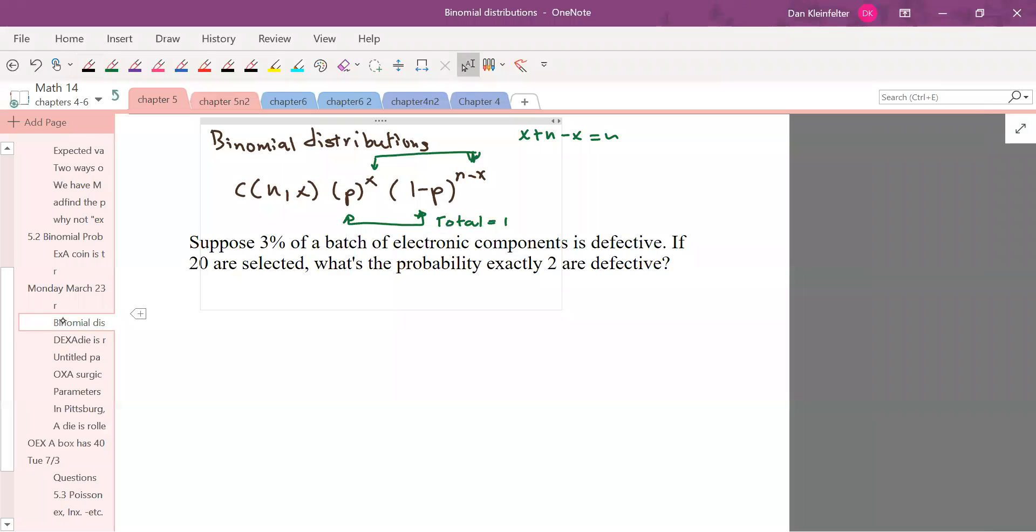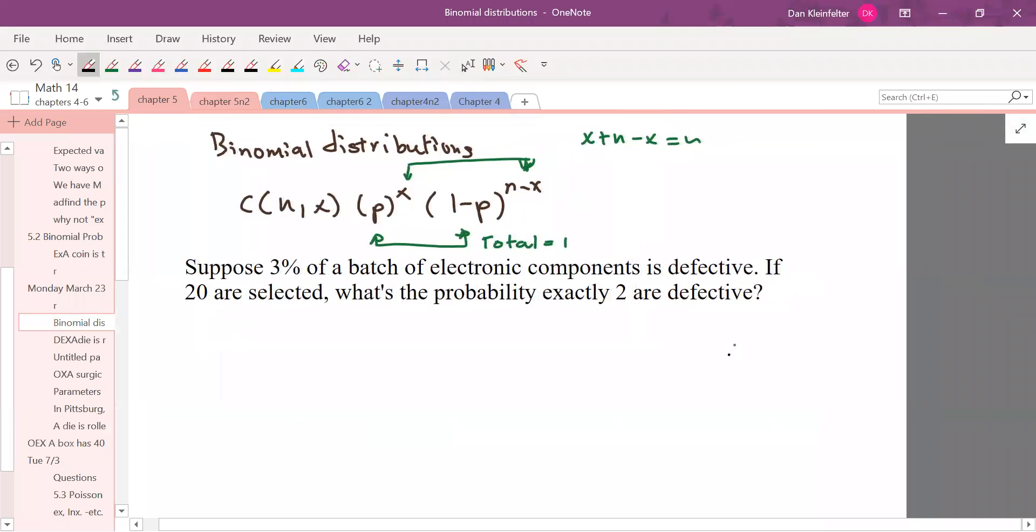Okay. So one more example. Suppose that we have a batch of electronic components and somehow it's known that 3% of the electronic components are defective. If we select 20 of the components, we want to know the probability that exactly two will be defective. So give this some thought and try it yourself. Pause the video and then restart it when you're ready to see the solution.